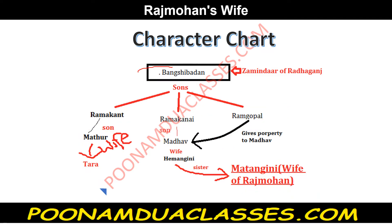If you know the characters well, the story will come together on its own. Bangshi Badan established an estate and lived life to the fullest, dividing his property among his three sons: Ramakant (father of Mathur), Ramakanai (father of Madhav), and Ramgopal. Due to Ramakant's shortcomings, Mathur never got a proper English education. But Mathur was quite successfully taught how to manage the estate — so while he lacked formal education, he knew well how to handle property.